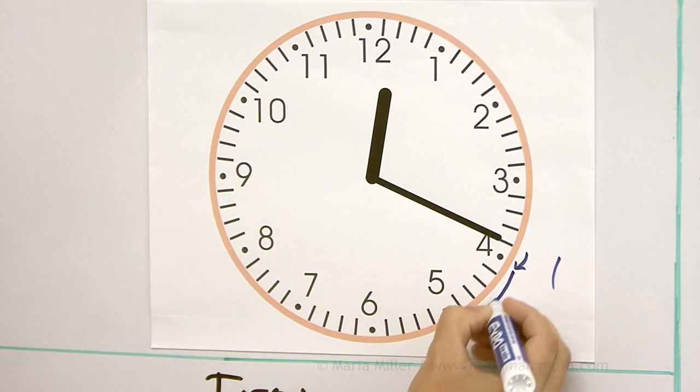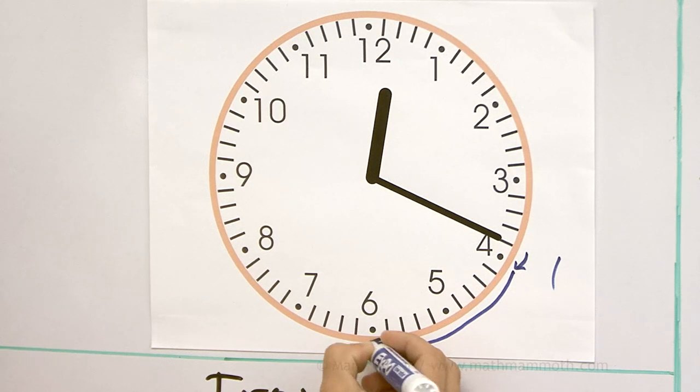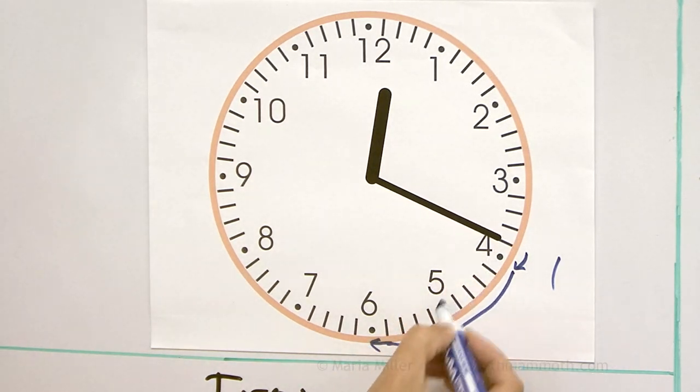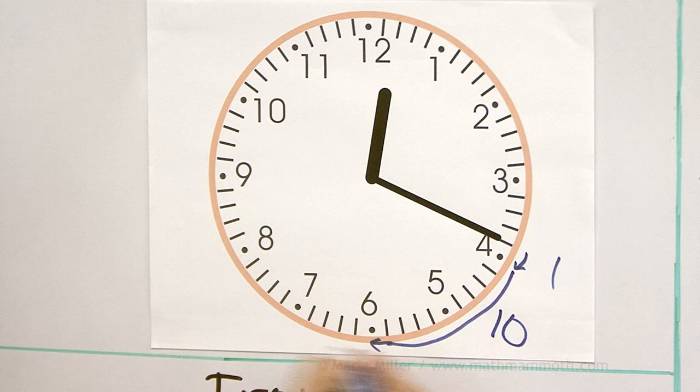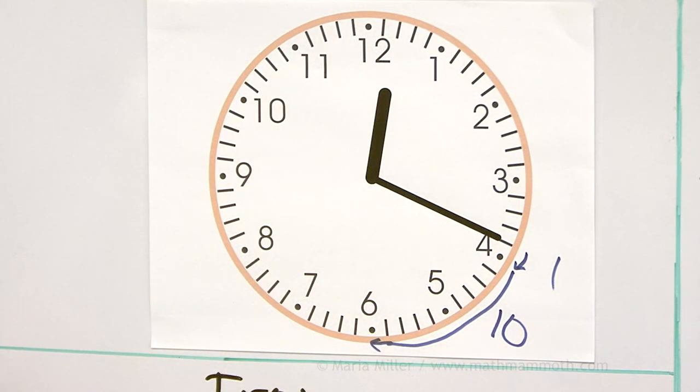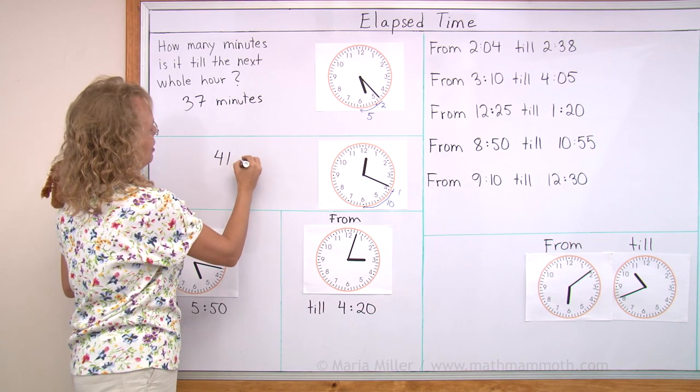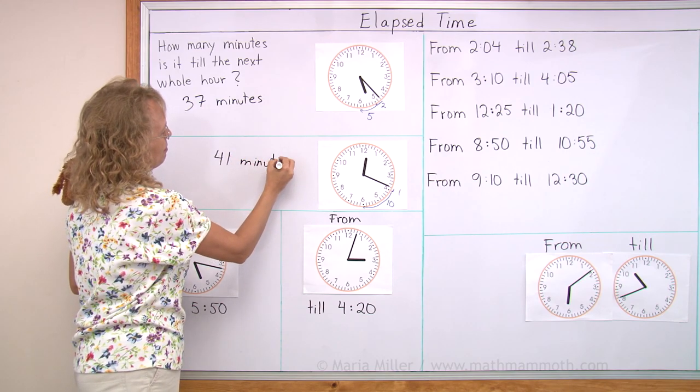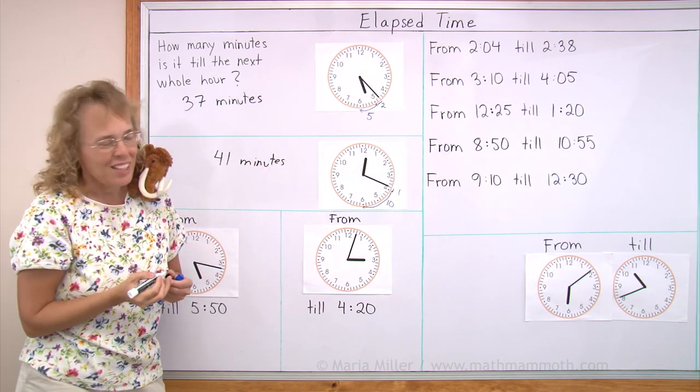There would be one minute right there. And then from here, there would be 10 minutes, five and five. And then from here all the way over there would be the half an hour or 30 minutes. So 30 minutes, 40 and one. 41 minutes. So most of the class is still left.